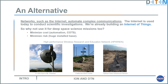There is an alternative: networks such as the internet automate these complex communications. The internet is used today to conduct scientific investigations and we're already building an internet of things, so why not use it for deep space science missions? This could minimize cost, since there are plenty of off-the-shelf routers that can be used to automate communication, and the risk is minimal because the installed base is gigantic.